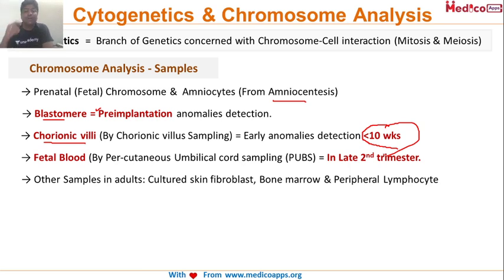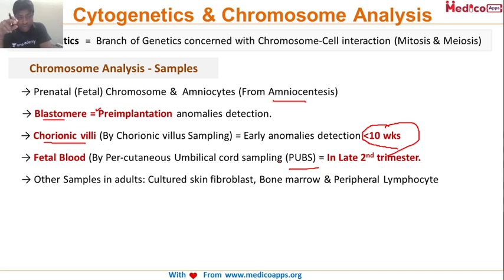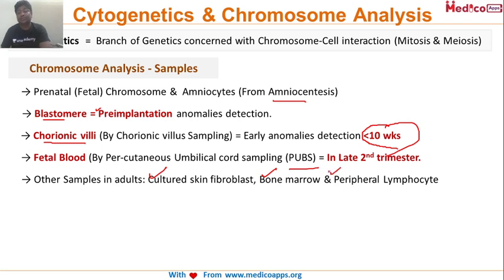We can also use fetal blood with a technology called PUBS — Percutaneous Umbilical cord Blood Sampling — which is generally done in the late second trimester. In adults, for cytogenetic studies we use cultured skin fibroblasts, bone marrow, and peripheral lymphocytes. These are all valid samples for cytogenetic analysis in adults.